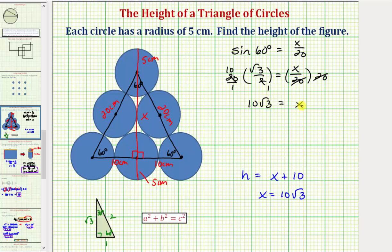Another way to find x is to recognize that any 30-60-90 right triangle is a multiple of the reference triangle with sides one, two, and square root of three. Since the hypotenuse is twenty and the reference hypotenuse is two, we multiply all three sides by ten. Two times ten is twenty, one times ten is ten, and square root of three times ten gives us x equals ten square root of three. So whichever method we use, the height of this triangle is ten square root of three units.